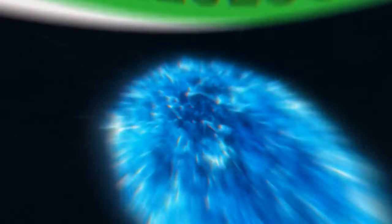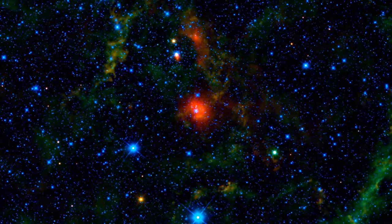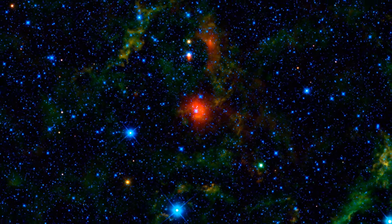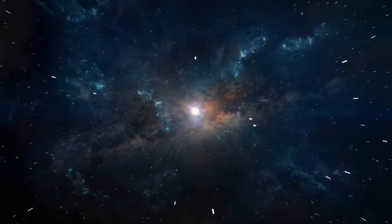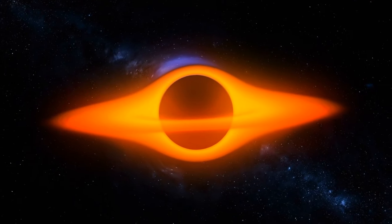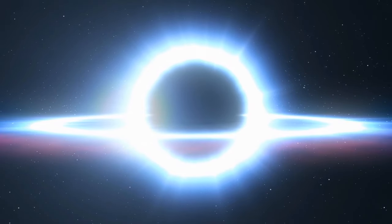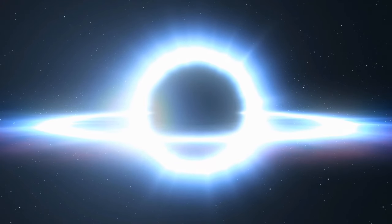The star might have no more than 300 years worth of fuel left in its core. Once it burns through these last reserves, the core will collapse, forming a black hole. As for the star's outer layers, they are likely to be blasted out into space at a mind-boggling 25,000 miles per second. This is what astronomers call a supernova.